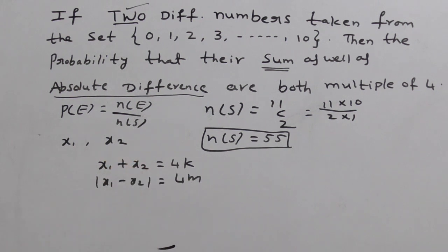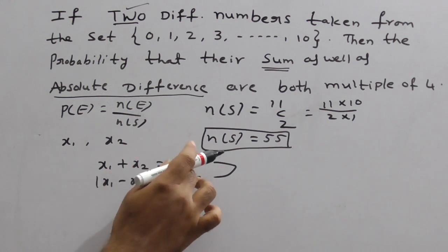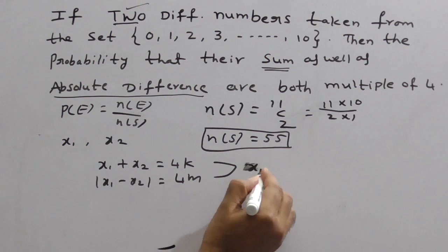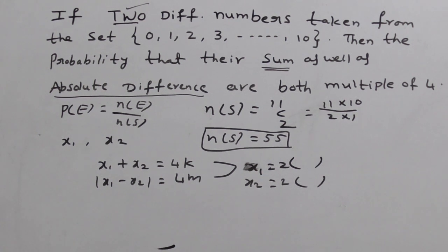So solve these two. If you remove mod here, you get plus or minus. X2 gets cancelled. You get 2X1 is equal to 4 of K plus or minus M. Therefore, you can observe easily X1 is equal to 2 into something number. Similarly, X2 is also 2 into something number. So X1 and X2, what is observation here? Both X1 and X2 should be even numbers. Why? Because we are getting X1 as 2 into something and X2 also 2 into something. So we have to select X1, X2 only even integers. What are the even integers from 0 to 10?